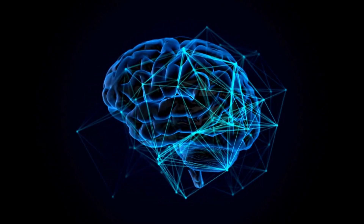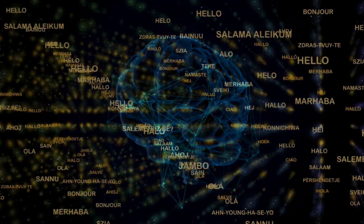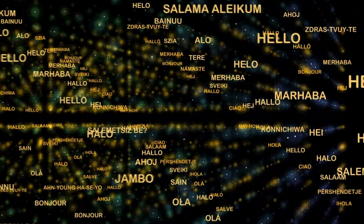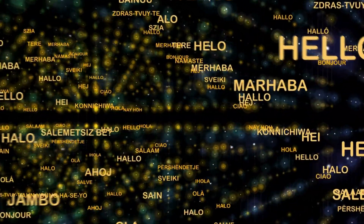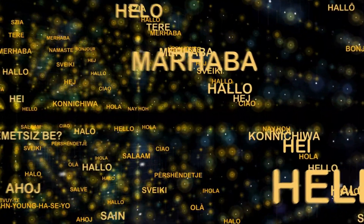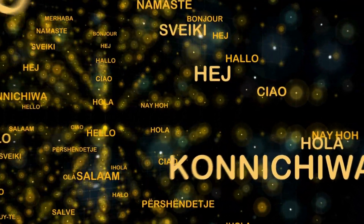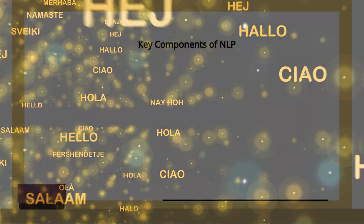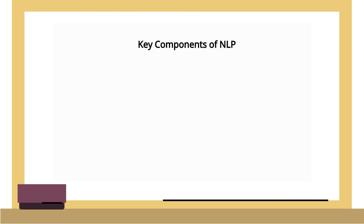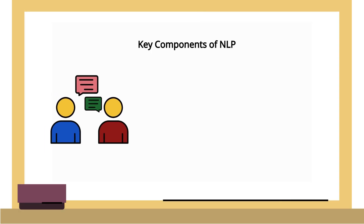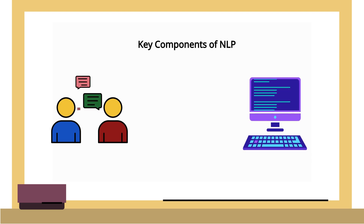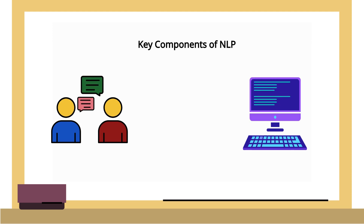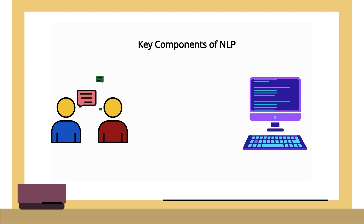NLP, a branch of artificial intelligence, enables machines to understand, interpret, and generate human language. It's essentially a bridge between how we communicate and how computers process that information, making language meaningful and actionable for technological applications.